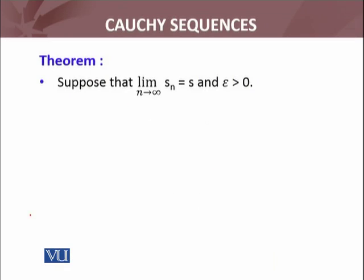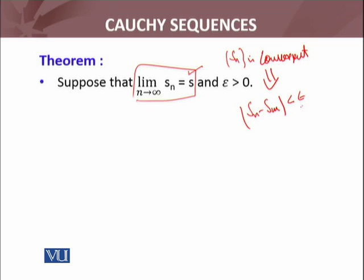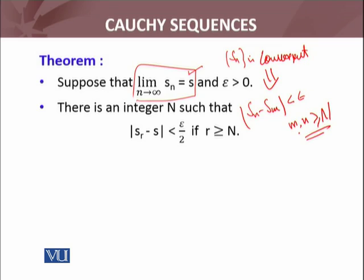Let's see the proof of that statement. Suppose that limit n approaches to infinity, Sn equals S. It means that I am considering the sequence Sn is convergent. This is a convergent sequence. Now I have to show that this sequence is Cauchy sequence. The target is that Sn minus Sm less than epsilon whenever M and N are greater than or equals to N. By definition of the convergence, there exists an integer capital N such that for all r greater than or equal to capital N, Sr minus S less than or equals to epsilon by 2.